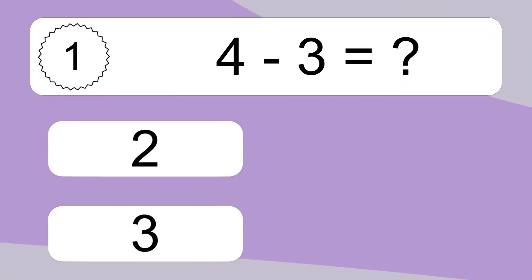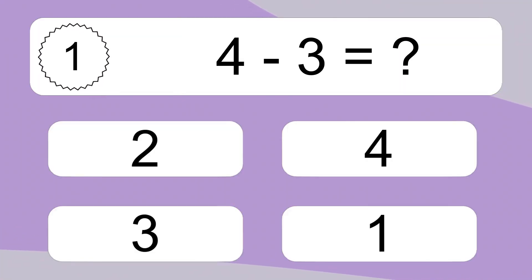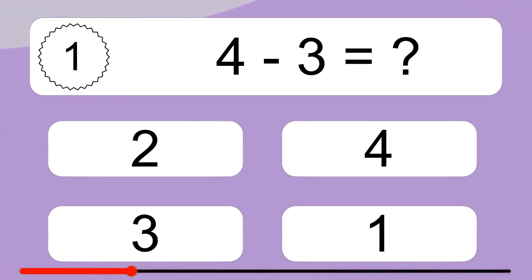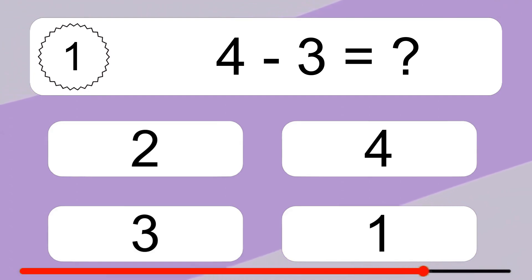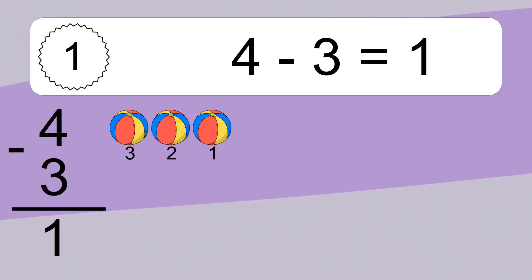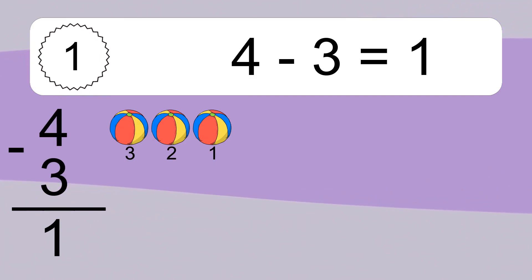4 minus 3 equals what? 4 minus 3 equals 1. Let's count it. 3, 2, 1.